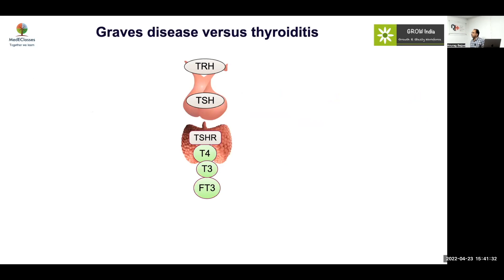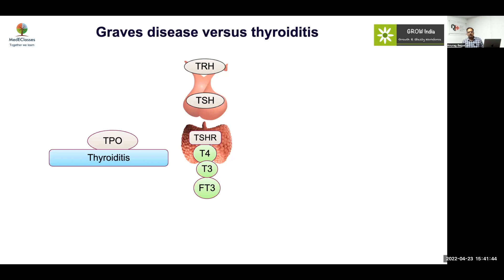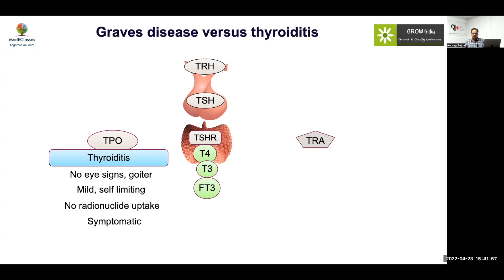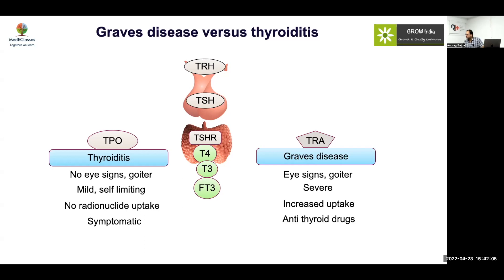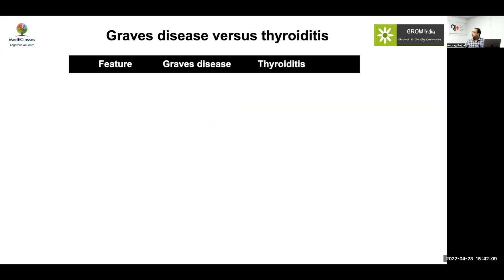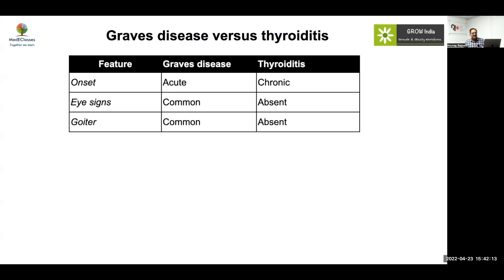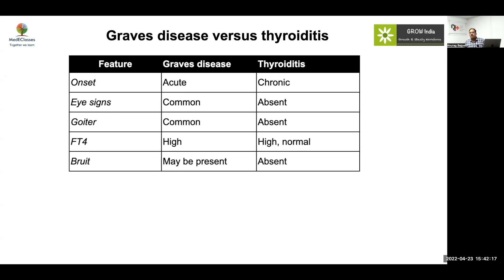From that point, the biggest question is: is it Graves' disease or thyroiditis? In thyroiditis, due to antibody, viral, or bacterial infection causing damage, there will be no eye signs or goiter. It is a milder, self-limiting disease with no radionuclide uptake. In Graves' disease, due to a stimulating antibody, there will be eye signs and goiter, severe disease, increased uptake, and antithyroid drugs are required. Rapid course, eye signs, goiter, very high FT4, and a bruit indicate Graves' disease; milder symptoms without these features suggest thyroiditis.